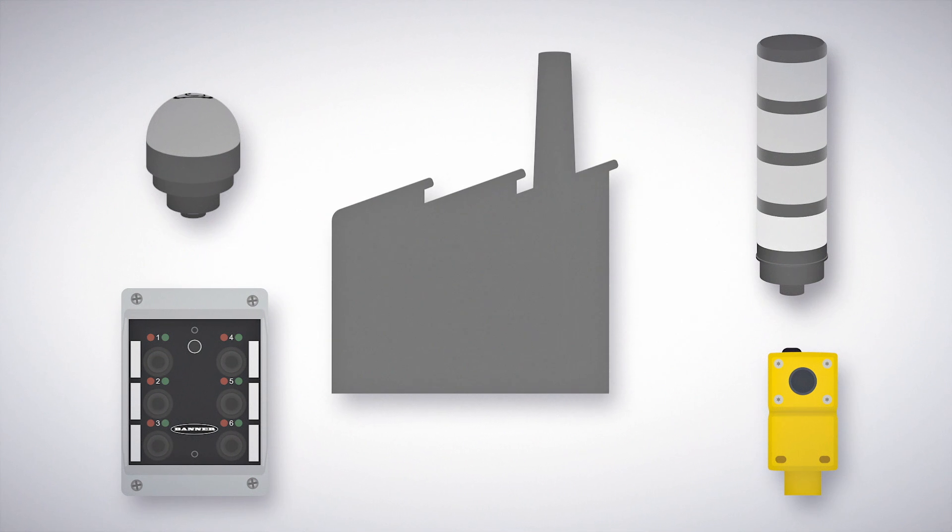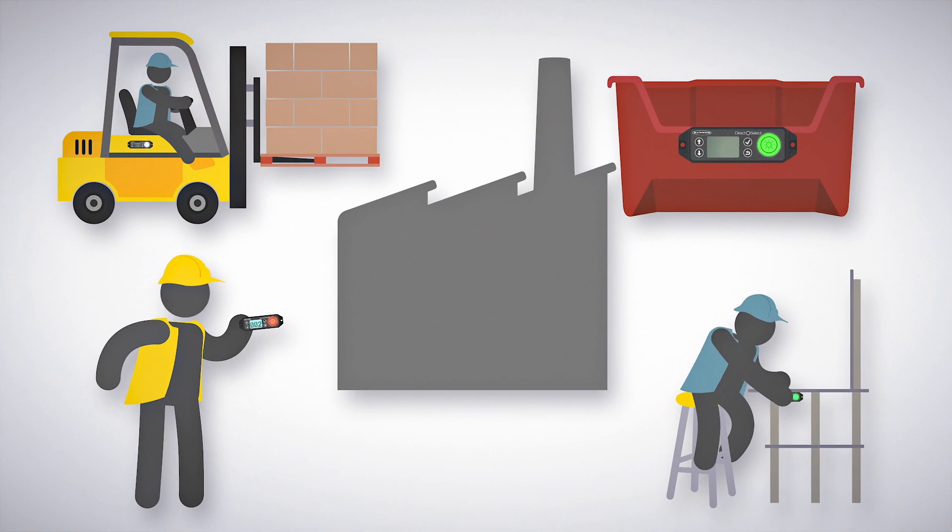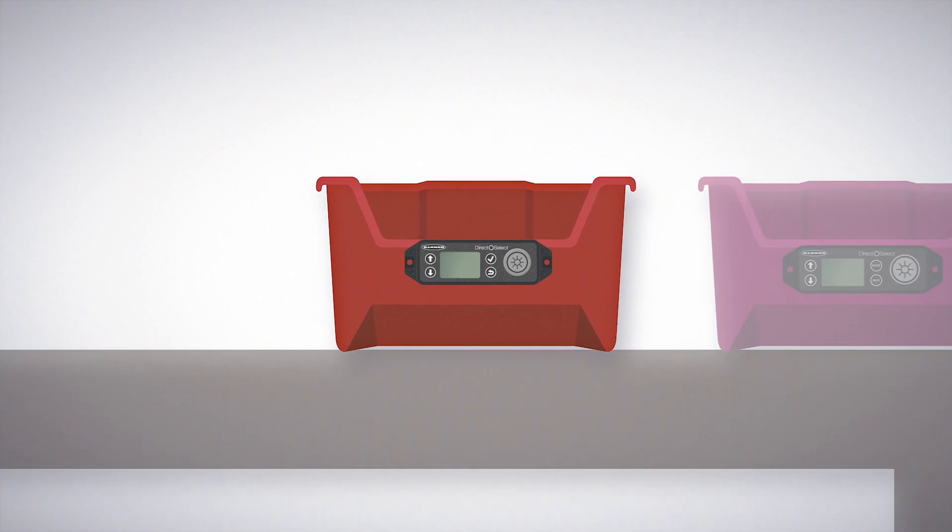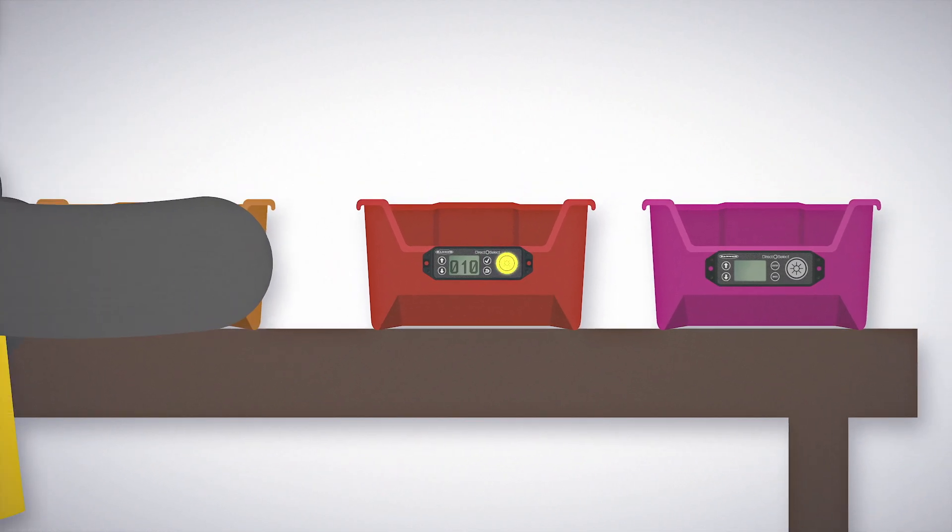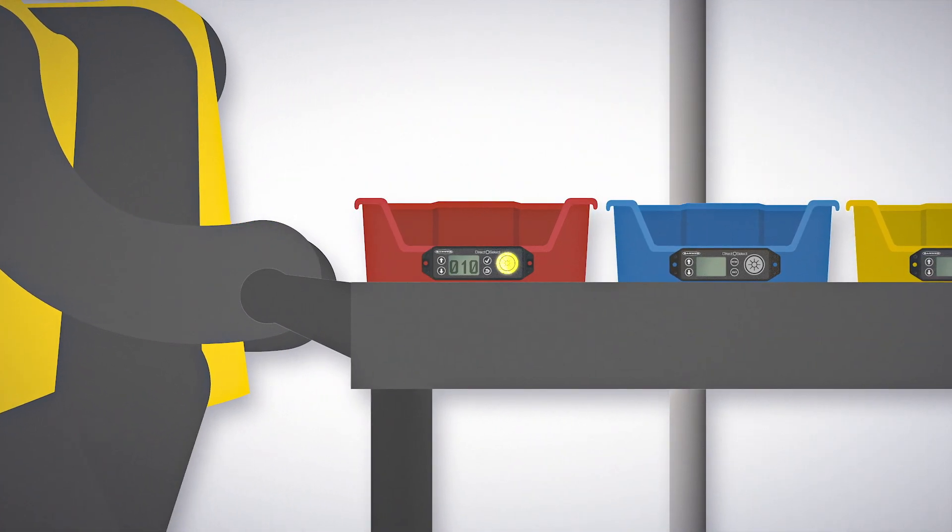For every job in your factory, the DirectSelect can enhance communication. Let's explore just a few. When mounted to containers, the DirectSelect node provides alerts and information to workers no matter where the bin is moved to. Use it to codify workstation arrangements based on production needs.